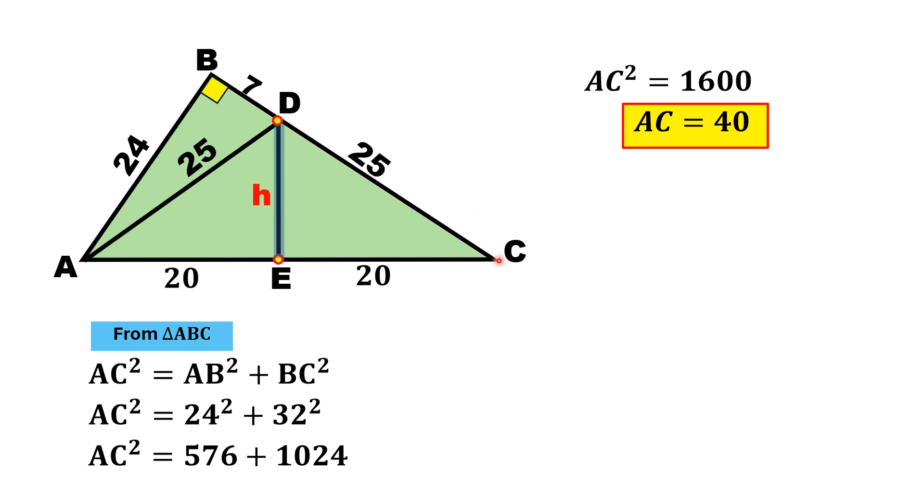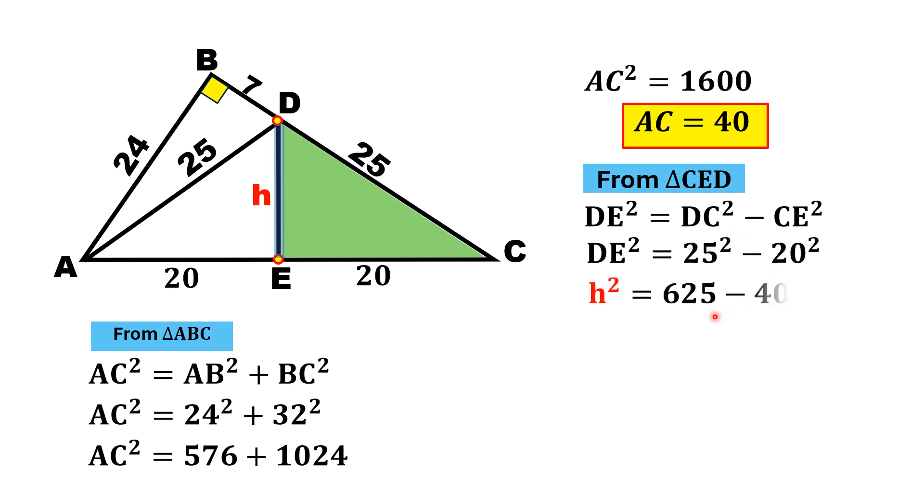DC is 25. Then, by right triangle CED, using the Pythagorean theorem, DE² = DC² - CE². Substituting the values, h² = 625 - 400 = 225. Taking the square root on both sides, h = 15 units.